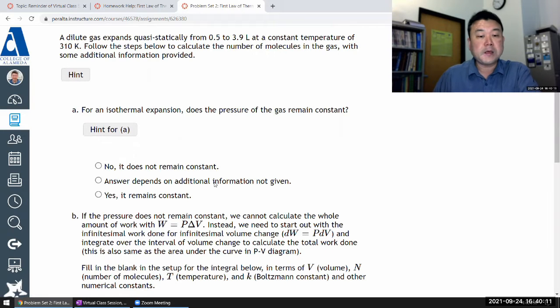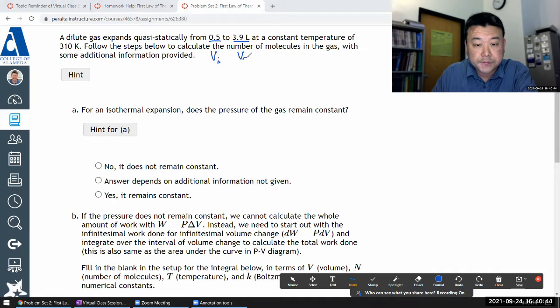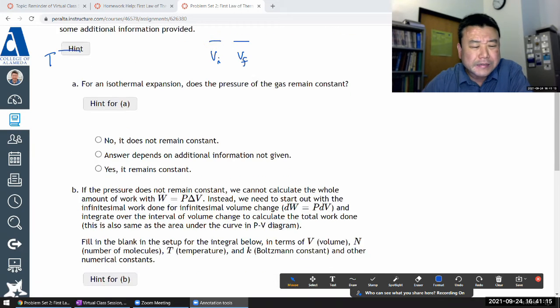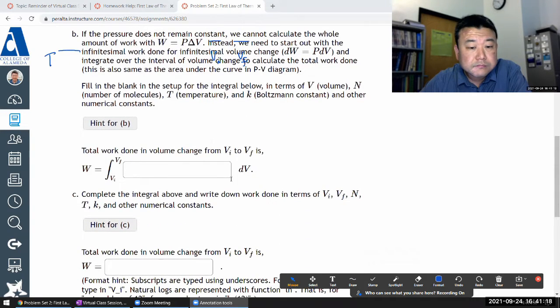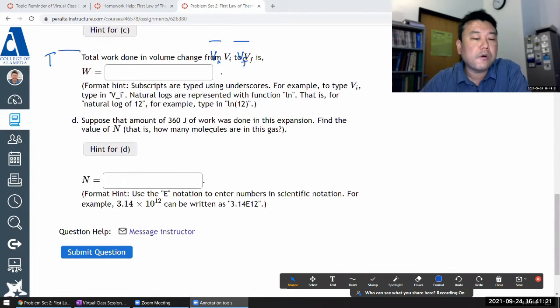Okay, so this is what the question says. A dilute gas expands quasi-statically from some volume, let me start labeling those, to some final volume at a constant temperature T. And it says follow the steps below to calculate the number of molecules in the gas with some additional information provided.